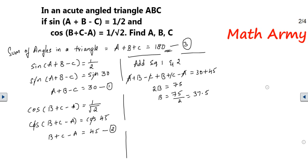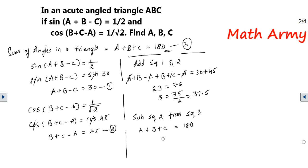I got the B value. Now I need to find A and C. I am going to use equation number 3 and subtract equation 2 from equation 3. First write equation 3: A + B + C = 180°. Now write B under B, and +C under C, and -A under A.